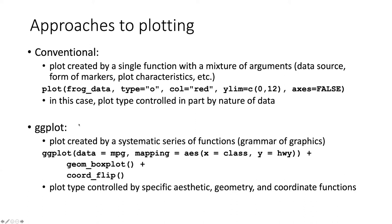In ggplot, the plot is created systematically by adding together a series of functions. There's one function to set up the plot itself, another function gets added onto it to control the geometry of the function, another function gets added to control the nature of the axes, and so on. So the plot type is not just controlled by a single function, but rather by layering a series of functions on top of each other, and each part of the ggplot is controlled by specific aesthetic, geometry, and coordinate functions.